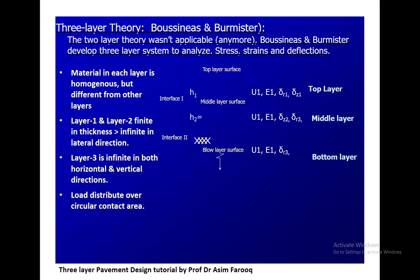Burmister developed the one and two-layer system, but the one and two-layer system was not able to calculate the structural property properly. In flexible pavement, the pavement subgrade layers all consist of different types of material. So we need the three-layer system for a more accurate representation.